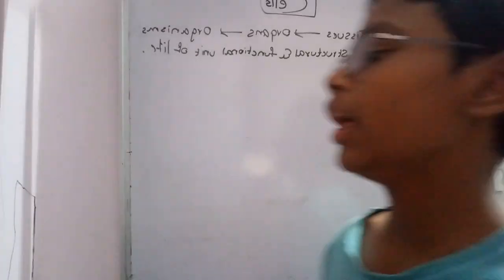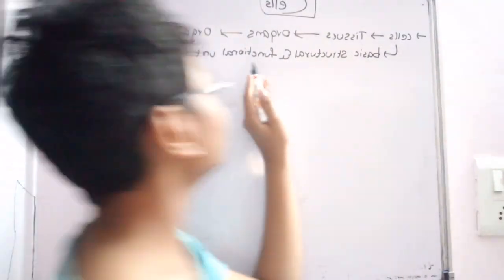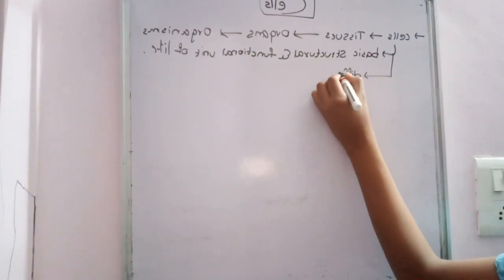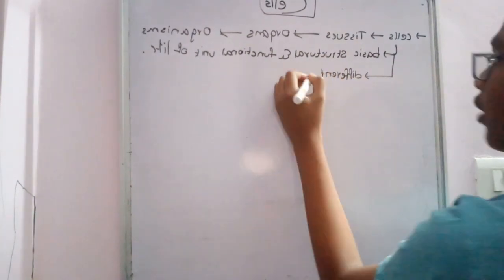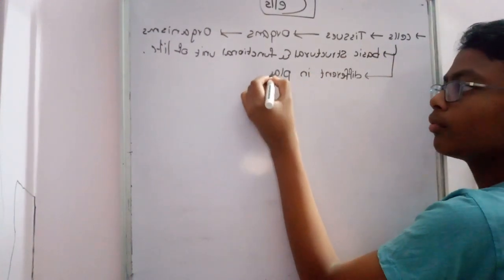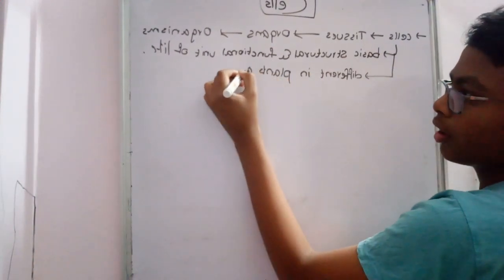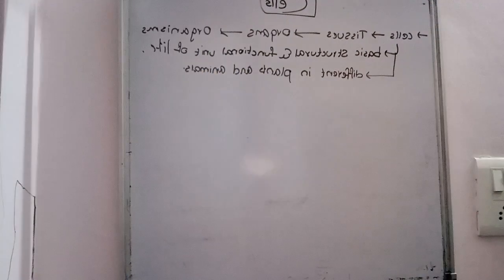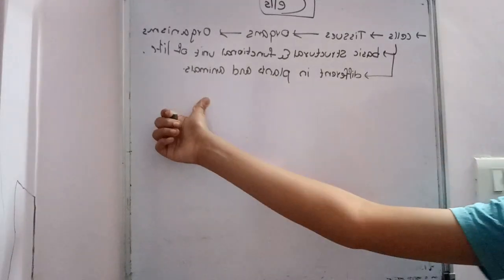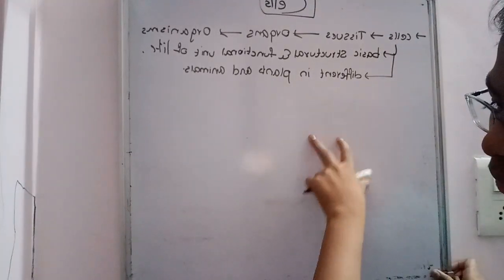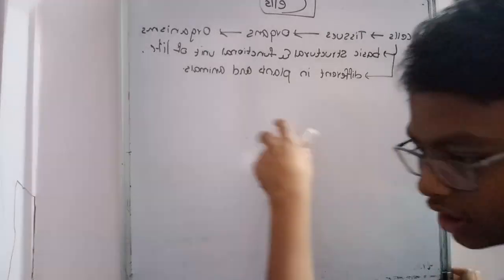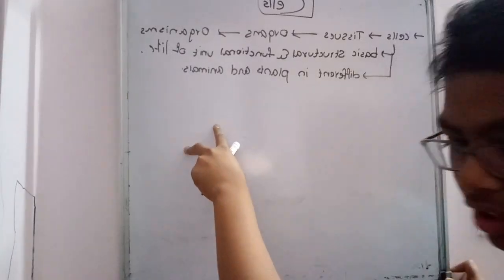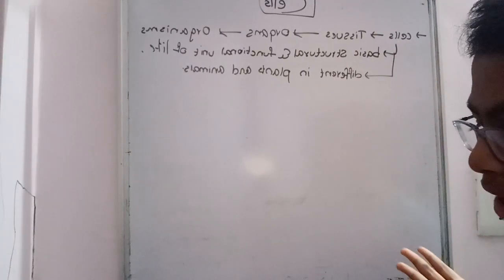These cells are different in plants and animals. In plants they have a particular structure and function, and in animals they also have their own structure and function. Now we will see the main parts of the cell.